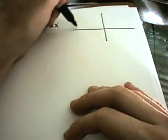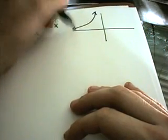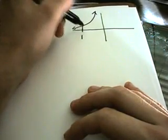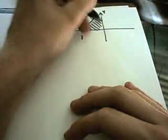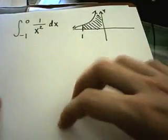If you think about the graph of 1/x², it looks like this. So what we're trying to do is integrate from negative one to zero—we're trying to calculate the area to the left of the y-axis. You can see it's spiking off to infinity here.